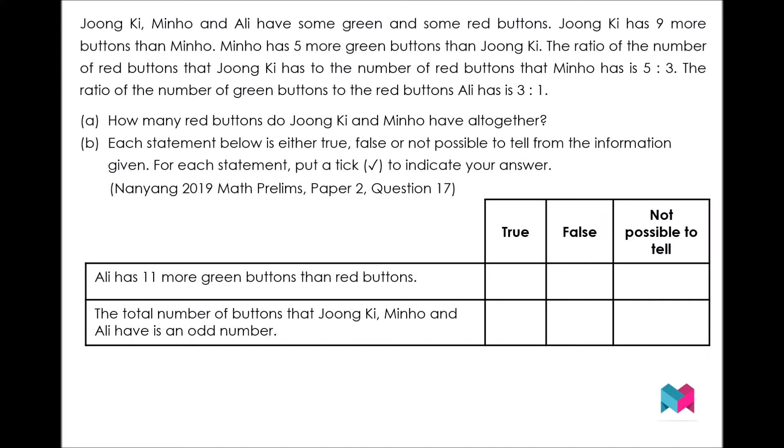For each statement, put a tick to indicate your answer. The first statement is: Ali has 11 more green buttons than red buttons. The second statement is: the total number of buttons that Jungki, Minho and Ali have is an odd number.